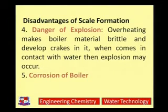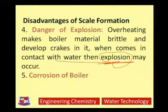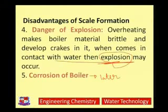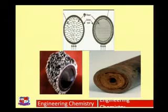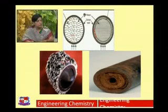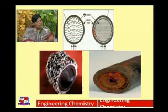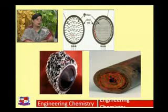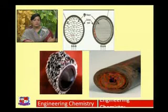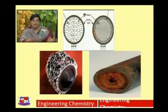When water comes into contact with certain substances, an explosion may occur. This is a very serious problem due to scale, and it may also cause corrosion, which we'll discuss later. Scale and sludge are two key problems — the loose, slimy precipitates are sludge, while the hard coating seen on boiler tubes is scale, which decreases the efficiency of the boiler. We need to prevent the formation of scale and sludge in the boiler vessel.